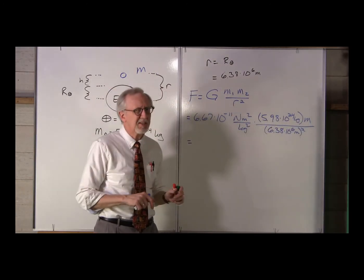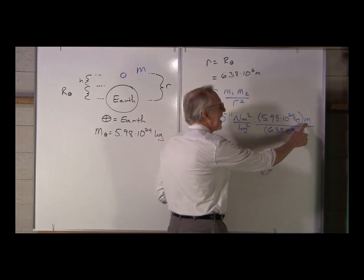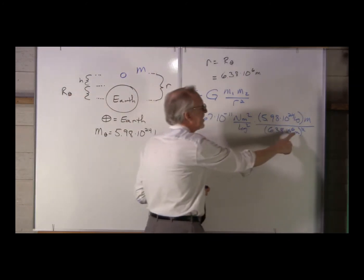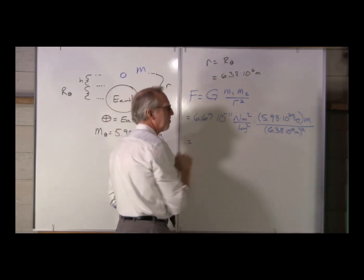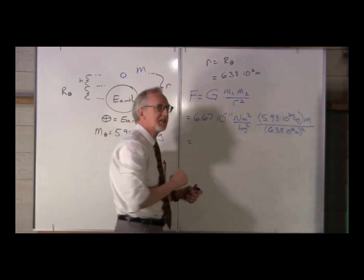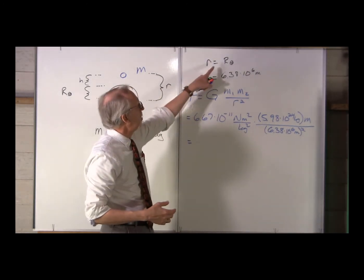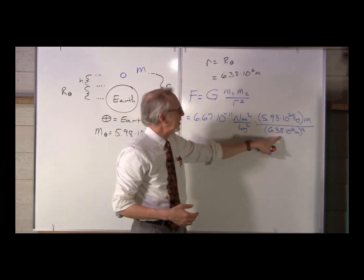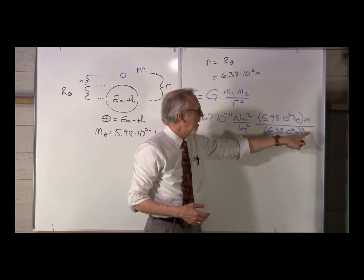Now, be careful — don't confuse this M, the mass of the object, with this M, which means meters. Then divide it by the distance between them, R squared. And R, remember, is just going to be the radius of the Earth: 6.38 times 10 to the 6 meters.